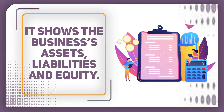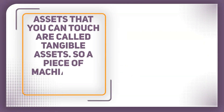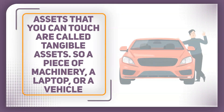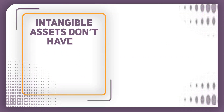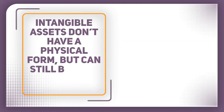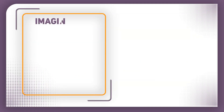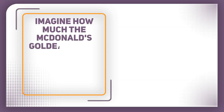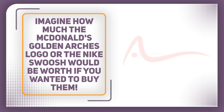Assets are things that the business owns. Assets that you can touch are called tangible assets. So a piece of machinery, a laptop, or a vehicle are all types of tangible assets. On the other hand, intangible assets don't have a physical form but can still be very valuable to the business. Examples of intangible assets include patents, trademarks, customer loyalty, and sometimes even logos. Imagine how much the McDonald's Golden Arch logo or the Nike swoosh would be worth if you wanted to buy them. You could probably put a value on them but you can't touch them.